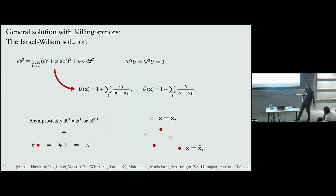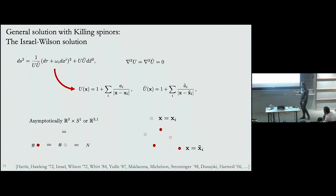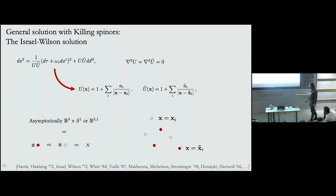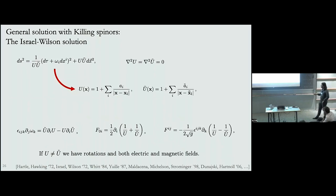The Israel-Wilson solution has an angular velocity — already promising — and functions U and Ũ whose equations of motion fix them to be harmonic functions, satisfied everywhere away from the poles. If I want my geometry to be asymptotically R³ times S¹ or asymptotically Lorentzian, it turns out the number of poles in U and in Ũ has to be the same. I'll denote that by n, the poles in U by x_i and the poles in Ũ by x̃_i.